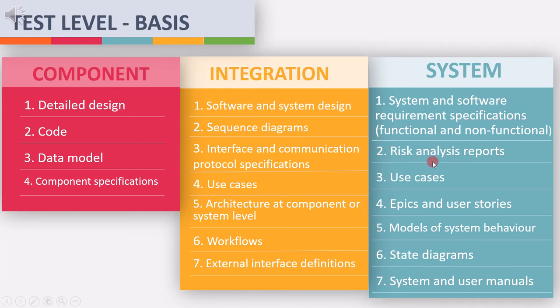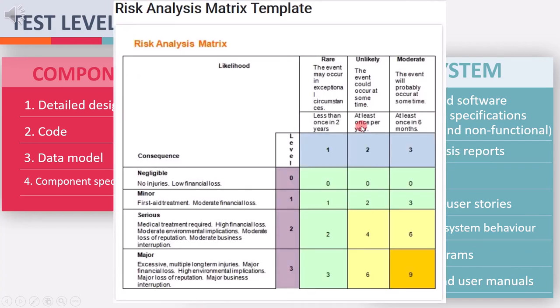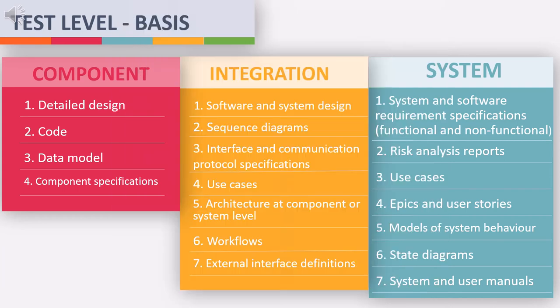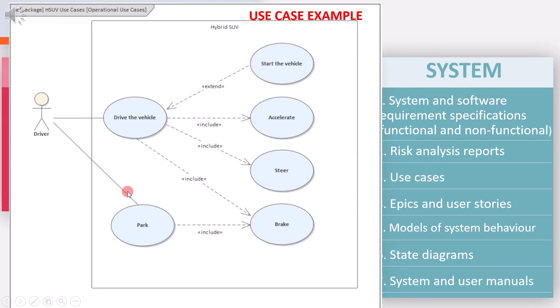The second input is risk analysis report. This report can be used to prioritize test cases — based on priority, features will be selected for testing. The next requirement is use cases, epics and user stories. If we know how the system will be used by the user, we can use that information for writing system-level test cases.